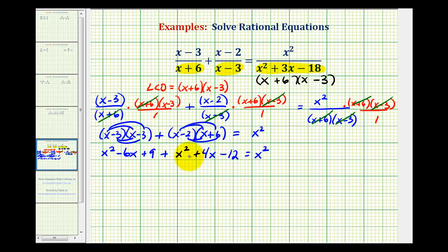Now we'll combine like terms on the left. We have one x squared plus one x squared, that's two x squared. Negative six x plus four x, that's minus two x. And then nine minus 12 is negative three, so we have minus three equals x squared.